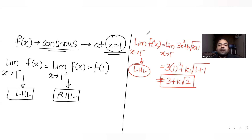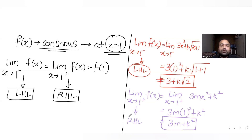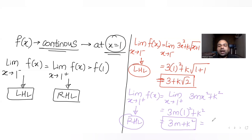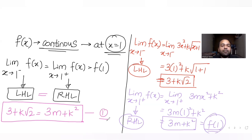For the right hand limit, we take the limit as x tends to 1 plus of 3mx squared plus k squared. Substituting x equal to 1 gives 3m plus k squared. Since f of 1 also uses the same expression as the right hand side, f of 1 equals 3m plus k squared. Equating left and right hand limits: 3 plus k root 2 equals 3m plus k squared. This is our first equation in k and m.